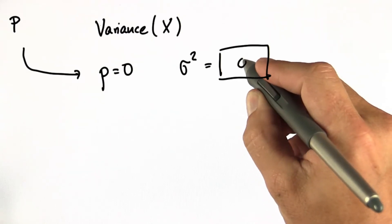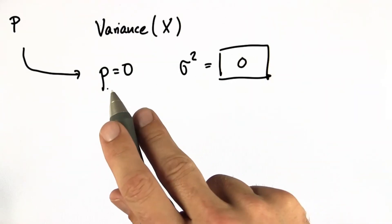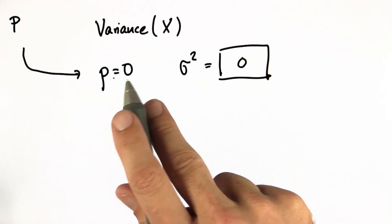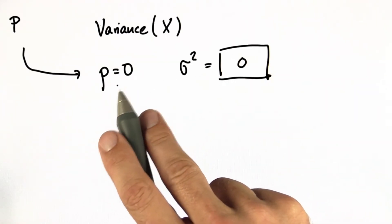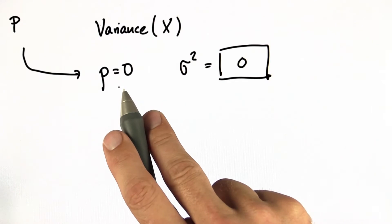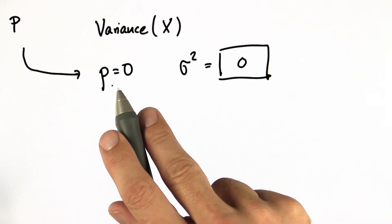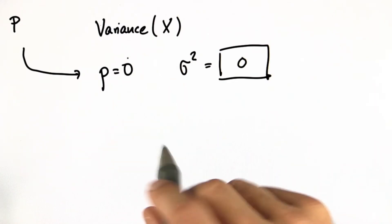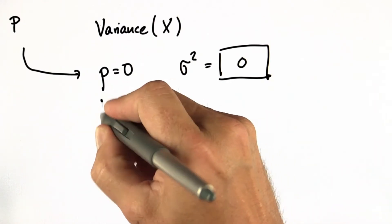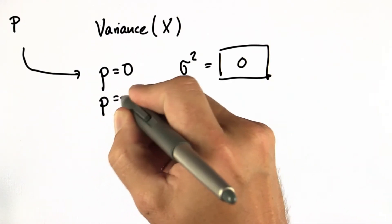And of course the answer is 0. If p equals 0, the coin comes up tails all the time, and as a result it won't vary, therefore there is no variance. The same is true for p equals 1. Once again we know the variance is 0.